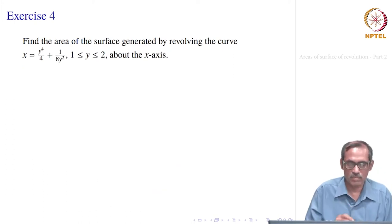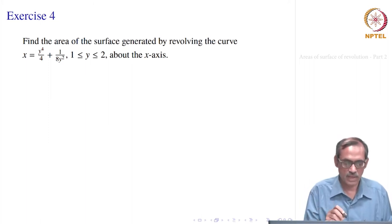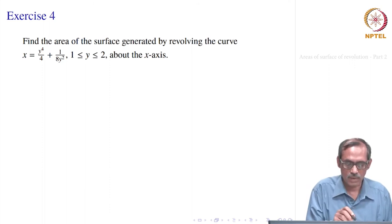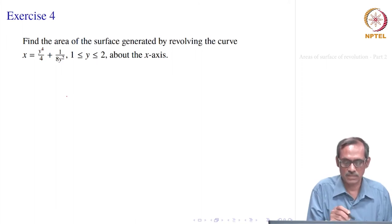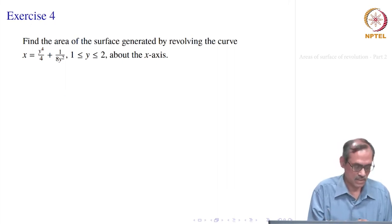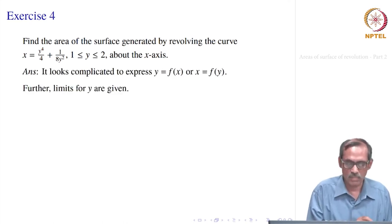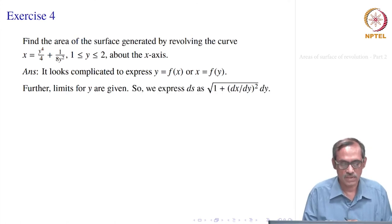Find the area of the surface generated by revolving the curve x = y⁴/4 + 1/(8y²), where y varies from 1 to 2, about the x-axis. Had it been about the y-axis, it would be straightforward, but here we revolve about the x-axis. Instead of solving for y in terms of x, we compute ds using the unified formula.